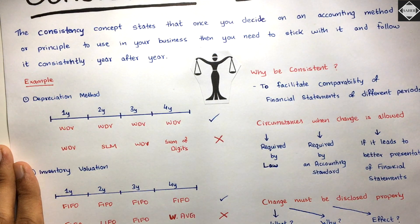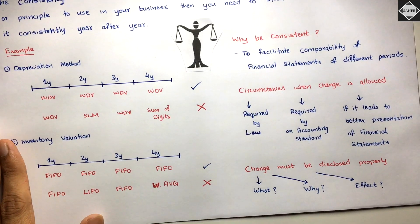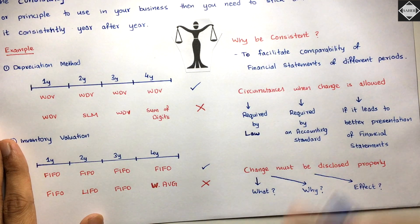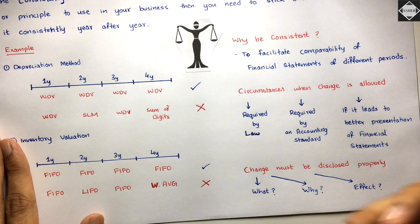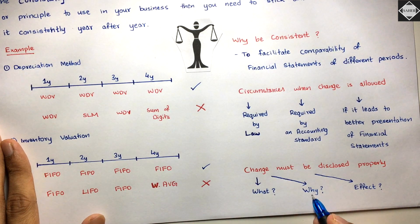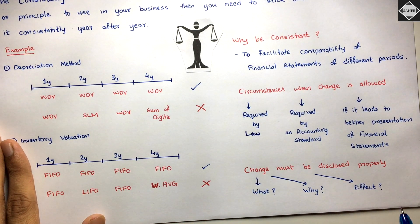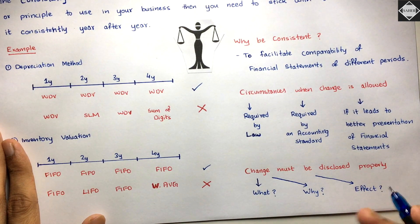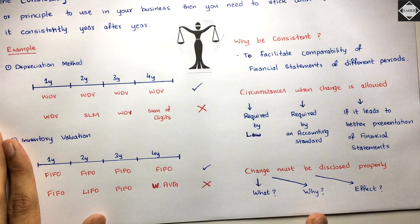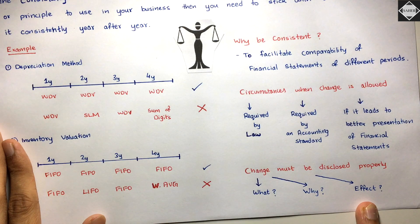When you change an accounting policy, method, or procedure, you have to specify it and disclose it in the footnotes or supplementary information of the financial statements. What have you changed? Why have you changed it? You have to give the justification and let the users of financial statements know what is the effect of the change - for example, how is it affecting the profit? Change must be disclosed properly and adequately: what has been changed, why it has been changed, and what is the effect of the change.